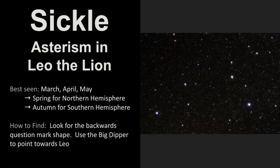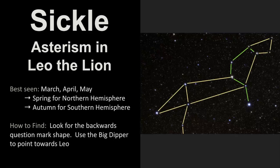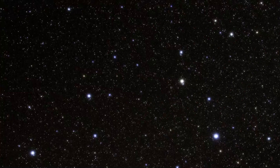So let's wrap up by reviewing everything we learned. The sickle asterism is a star pattern in Leo the lion, best seen in March, April, and May — springtime for the northern hemisphere, or autumn for the southern hemisphere. The best way to find it is to look for that backwards question mark shape, and you can use the big dipper to help aim you towards Leo. I hope this video was helpful. Let me know in the comments whether you're able to see this in your part of the world. Thank you for watching — remember, keep going outside, bring a friend along, and as always, keep looking up.